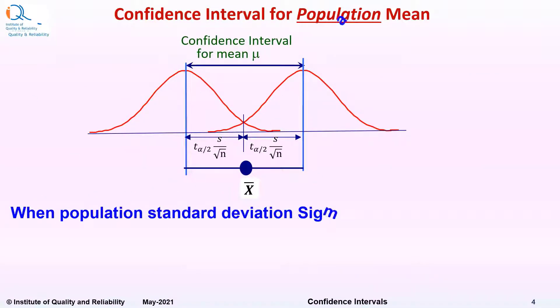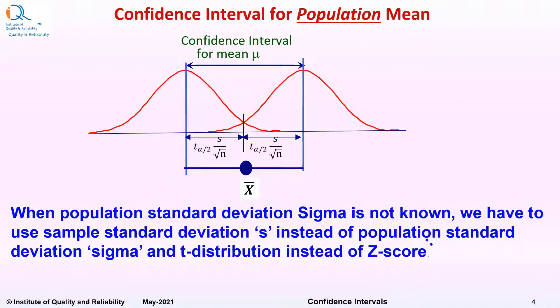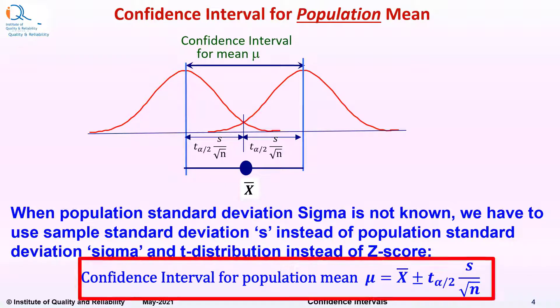When population standard deviation sigma is not known, we have to use sample standard deviation s instead of population standard deviation sigma and t distribution instead of z-score or standard normal distribution. Therefore, confidence interval for population mean μ will now be given by x̄ ± t(α/2) × s/√n.